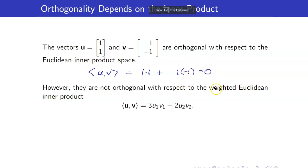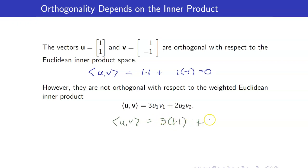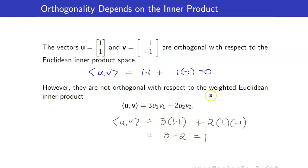However, using the weighted Euclidean inner product defined as follows, their inner product is going to be 3 times 1 times 1 plus 2 times 1 times negative 1, and this is equal to 3 minus 2, which is equal to 1. So they are not orthogonal with respect to the weighted Euclidean inner product.